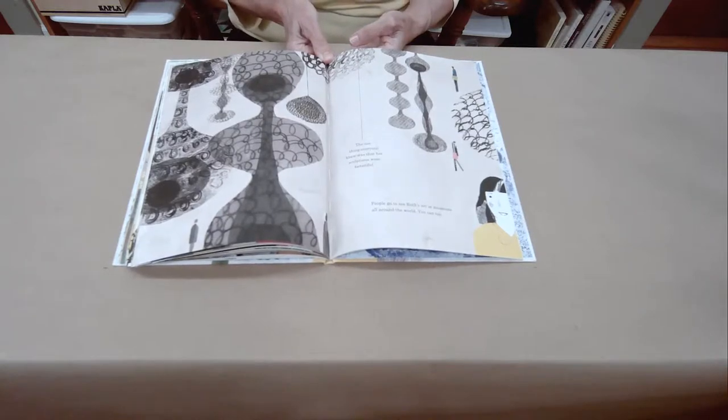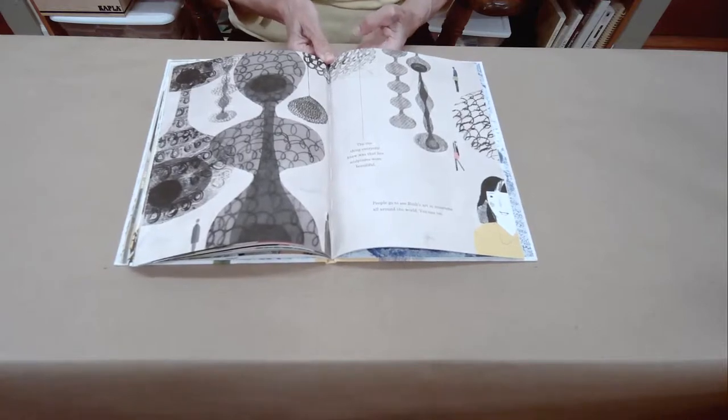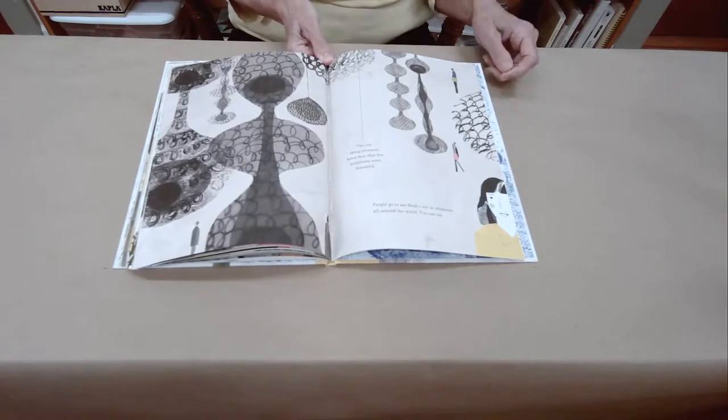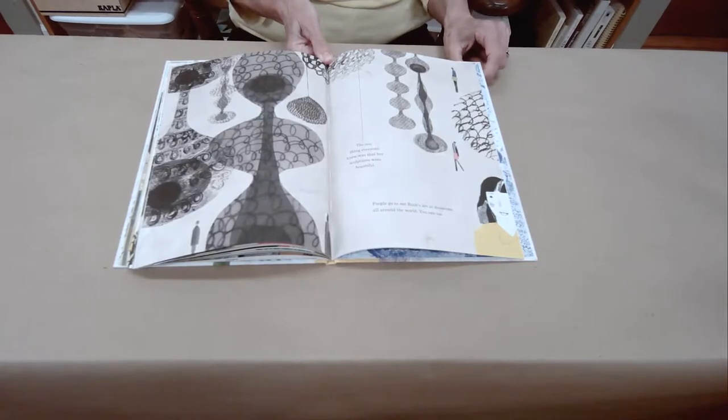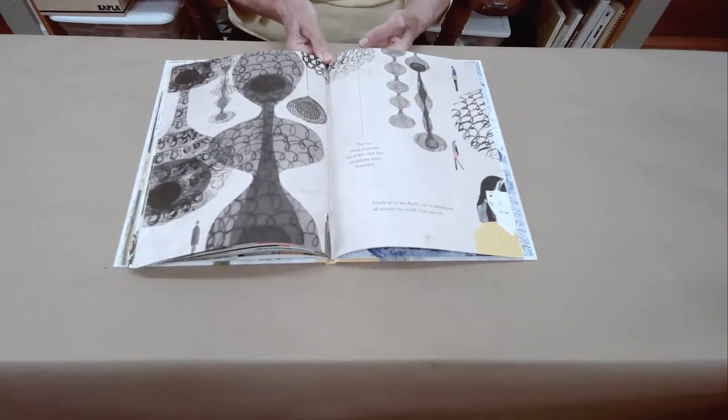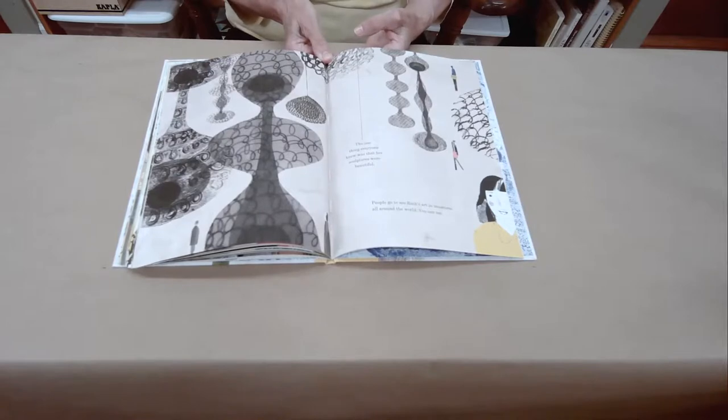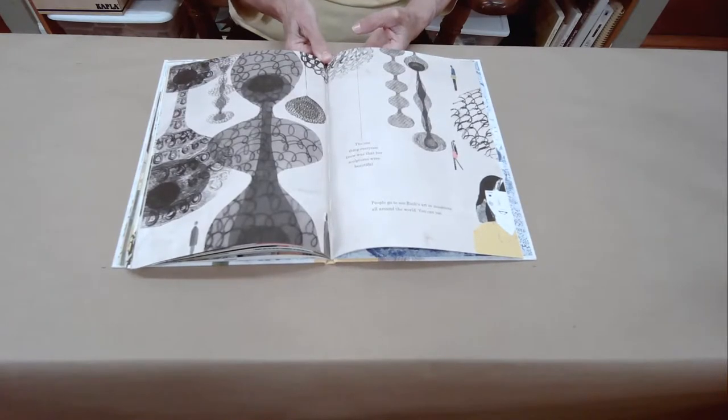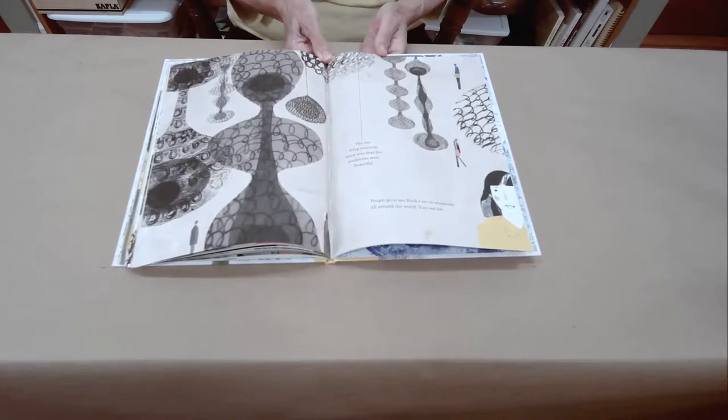When you come to the Honolulu Museum of Art, you will see sculptures, wire sculptures by another artist, Alexander Calder. And look for how artists have made things by hand using things like pieces of wood and string, and even coconuts and paper and photographs. All kinds of things to make beautiful works of art.